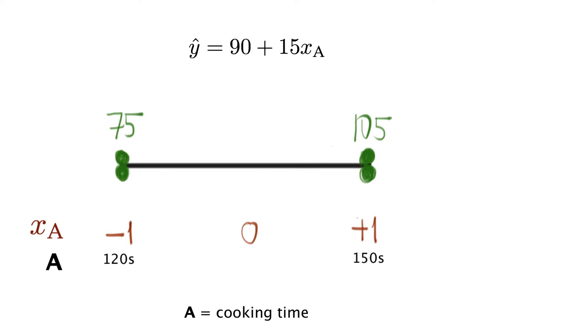So back to the popcorn example from the prior video. We had a single factor that affects the system, factor A, the cooking time. And we developed the model y equals 90 plus 15 times xA. The interpretation of the 15 xA term in the model is that if we increase the cooking time from minus 1 to 0 or from 0 to plus 1 in coded units, that's a 1 unit increase, then the number of popped but unburnt popcorn increases on average by a value of 15 units.